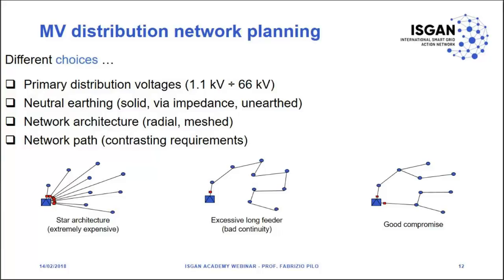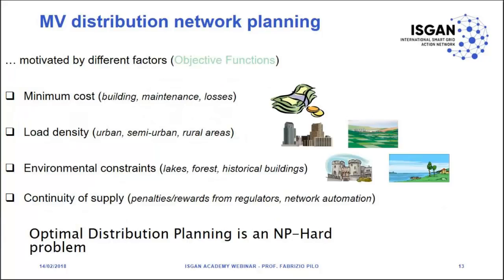For distribution planning we have two different options for system development. For primary distribution voltage we are talking about voltages in the range between 1 kV and 66 kV generally, though this varies by country. We have different network architectures, the most common being radial or meshed. There are possible different paths in the system, just a few examples being the star configuration, very long feeders, and various compromises between different options.